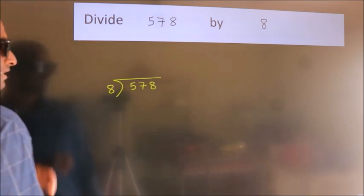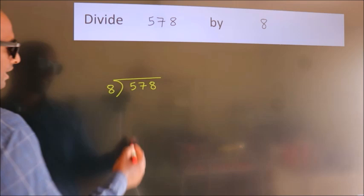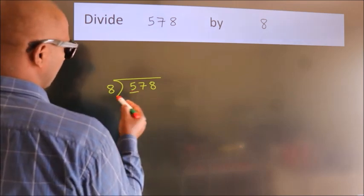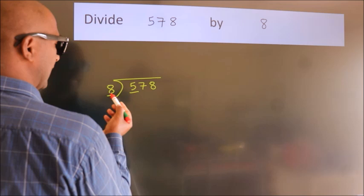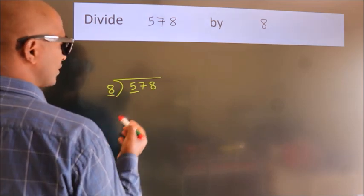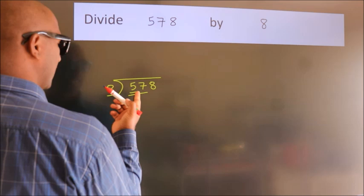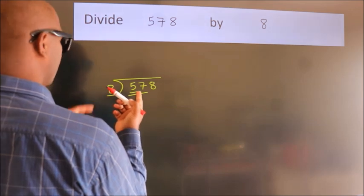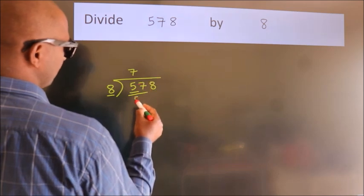This is your step 1. Next, here we have 5, here 8. 5 smaller than 8. So we should take two numbers, 57. A number close to 57 in 8 table is 8 7's 56.